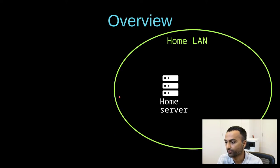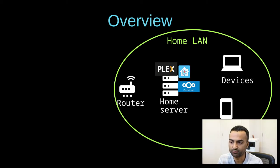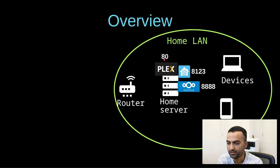Firstly I just want to explain where we're coming from here. You might have a home network with a server running various services like Plex, Home Assistant for your home automation, and maybe some cloud storage or a network attached storage. These are accessed by your various devices in your home that are connected to the same home network, hosted on various ports on your server, and you would type in an IP address or a URL to access them.